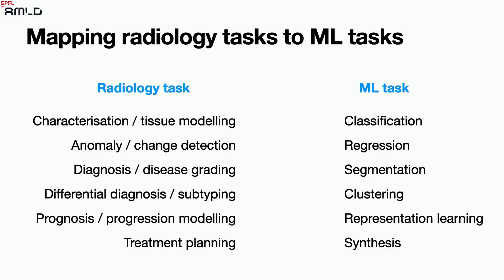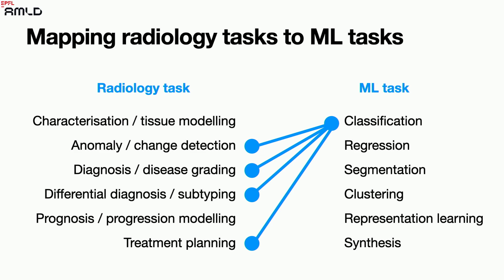On the other side, this is what we know how to do in machine learning: classification, regression, segmentation, clustering, representation learning, synthesis. The task of the engineer is to say: my radiologist wants to do this — how do I approach it? And the point is that it's really not a one-to-one mapping; there are many different solutions in both directions. For example, if you're very good at classification, you could do anomaly detection, diagnosis, subtyping, or even treatment planning.